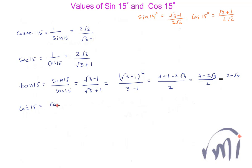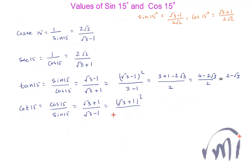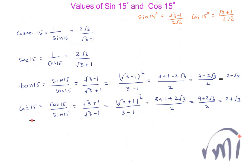Cot 15 equals cos 15 divided by sin 15, which equals (√3 plus 1) divided by (√3 minus 1). Multiplying both numerator and denominator by (√3 plus 1), we get (√3 plus 1)² divided by (√3 plus 1)(√3 minus 1), which equals (3 plus 1 plus 2√3) divided by (3 minus 1), giving (4 plus 2√3)/2, so cot 15 equals 2 plus √3.